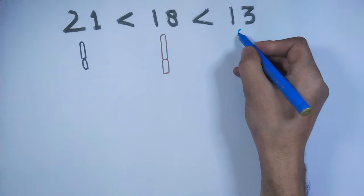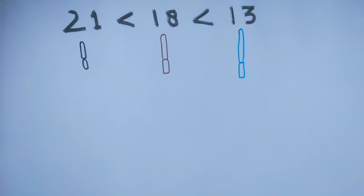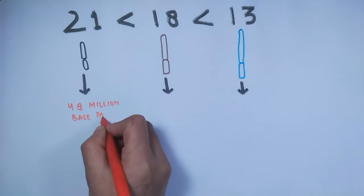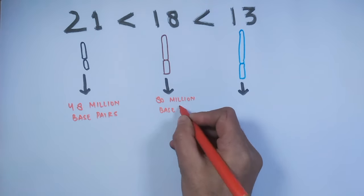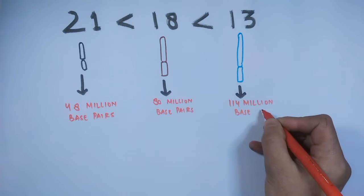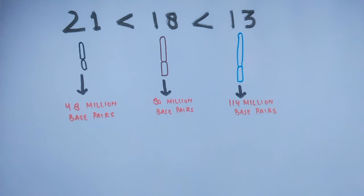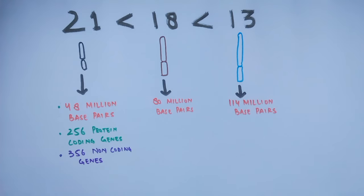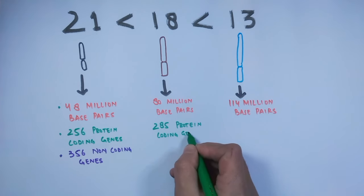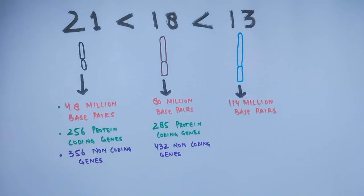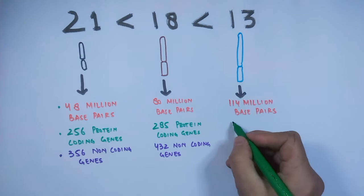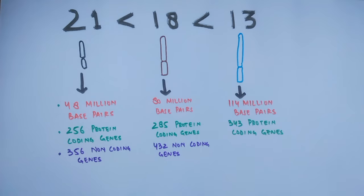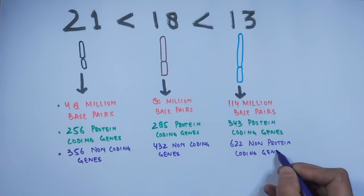Analyzing the data gives us insight into how many genes are present on the 21st, 18th, and 13th chromosomes. The 21st chromosome has 48 million base pairs, the 18th has 80 million base pairs, and the 13th has 114 million base pairs. The 21st chromosome has 256 protein-coding genes and 356 non-protein-coding genes; the 18th has 285 protein-coding and 432 non-protein-coding genes; and the 13th has 343 protein-coding and 622 non-protein-coding genes.